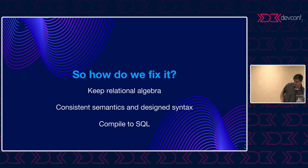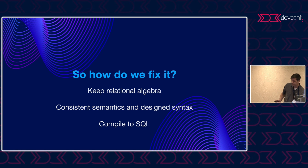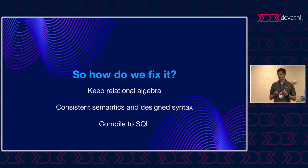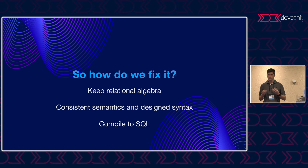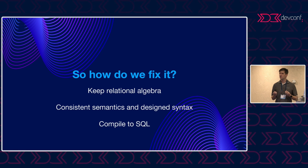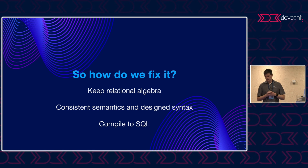So how do we fix it? We believe relational algebra is fundamental and universal, so let's keep that. Then we create a new language with consistent semantics and design syntax, and compile to SQL. Because SQL is so widely available, it's great to compile to it so you can execute in many different places. Plus you keep that declarative nature — you still give the query optimizer the power to make your queries efficient.